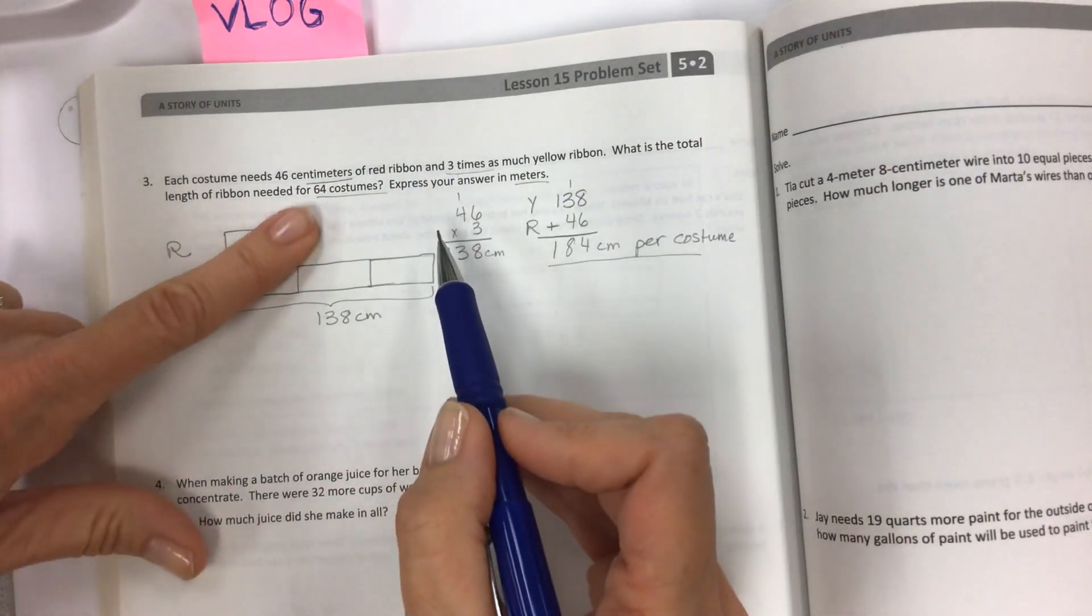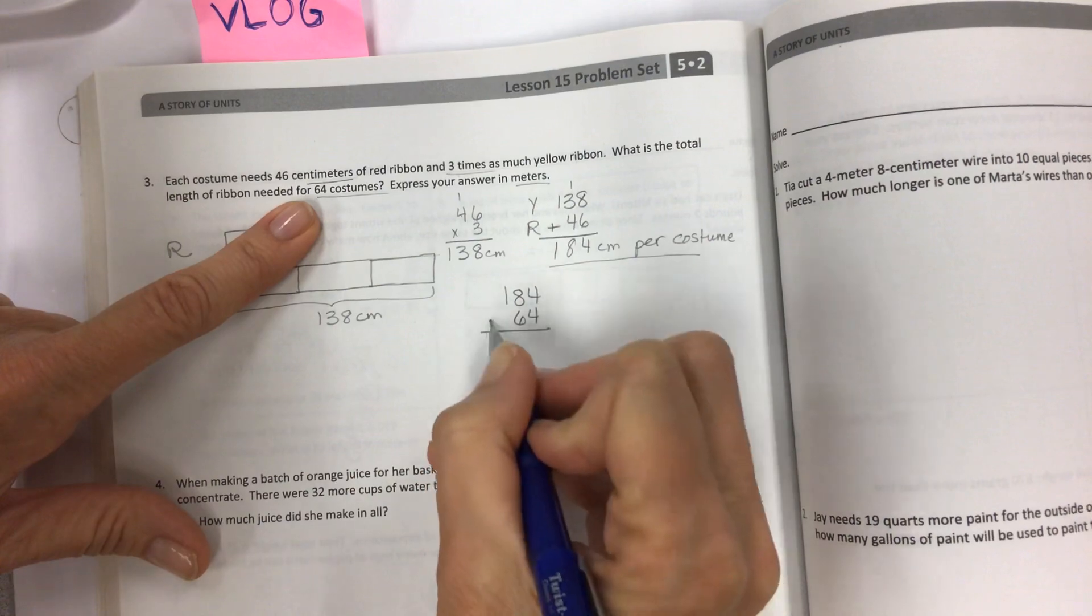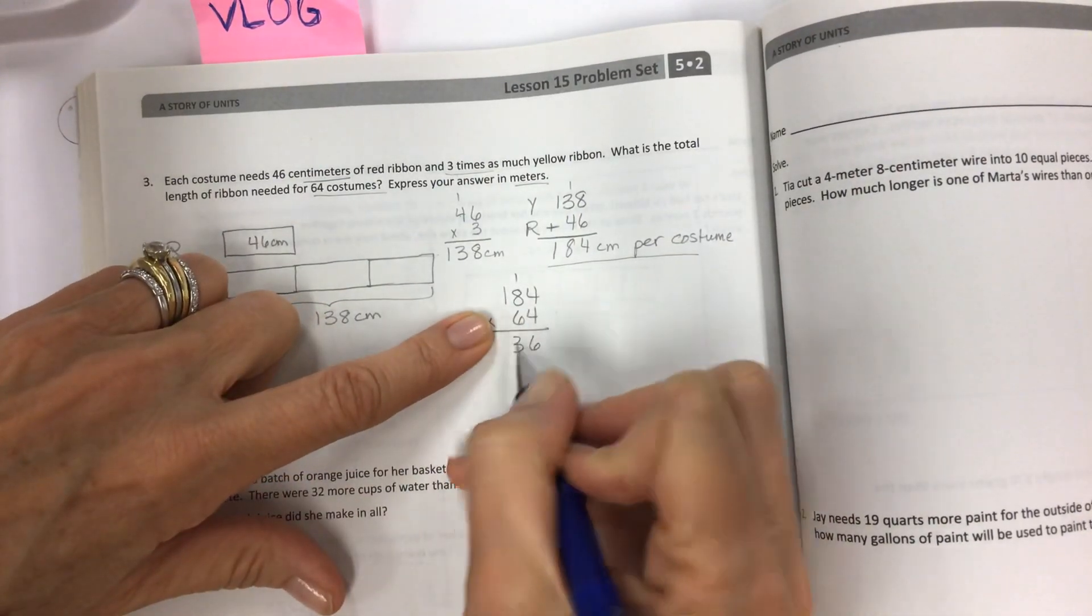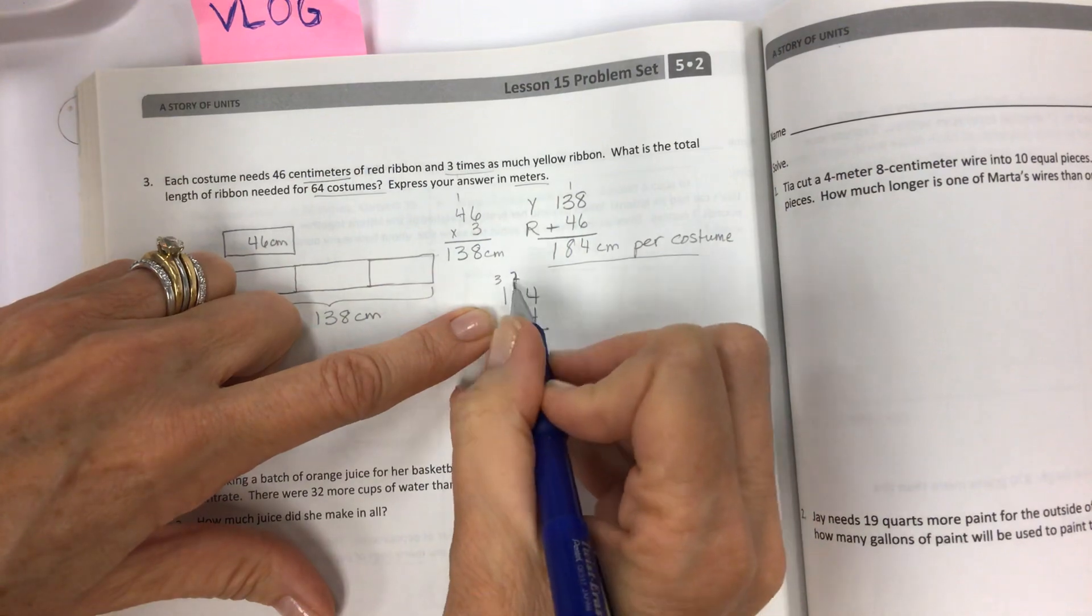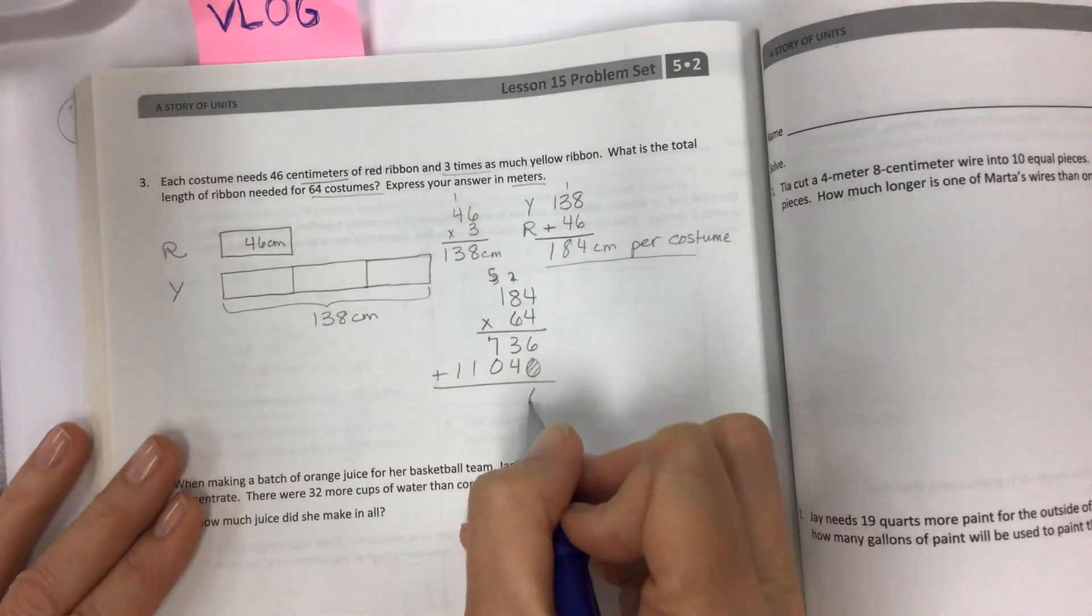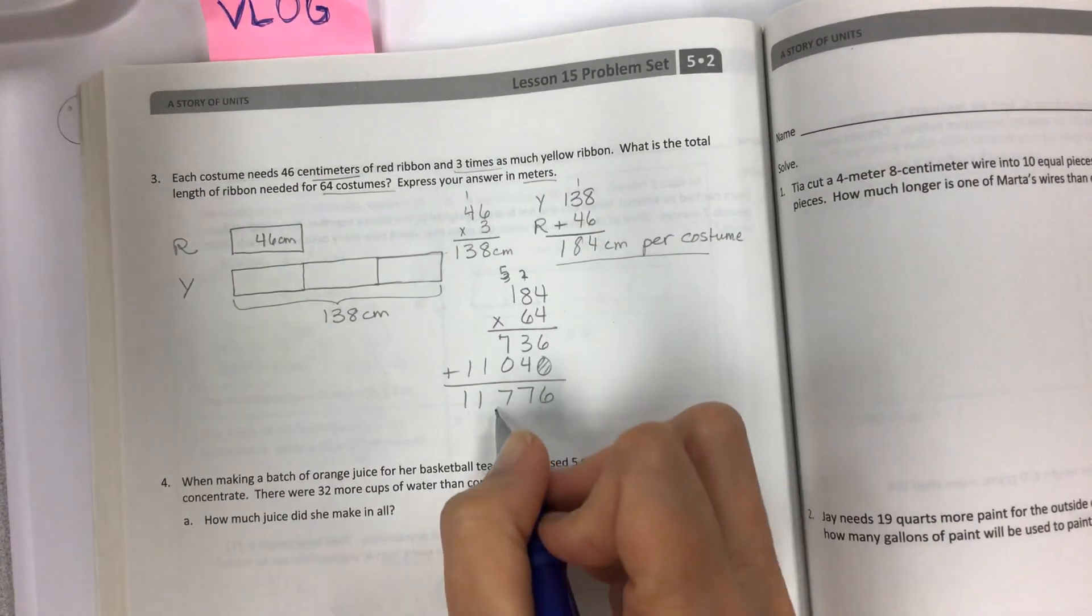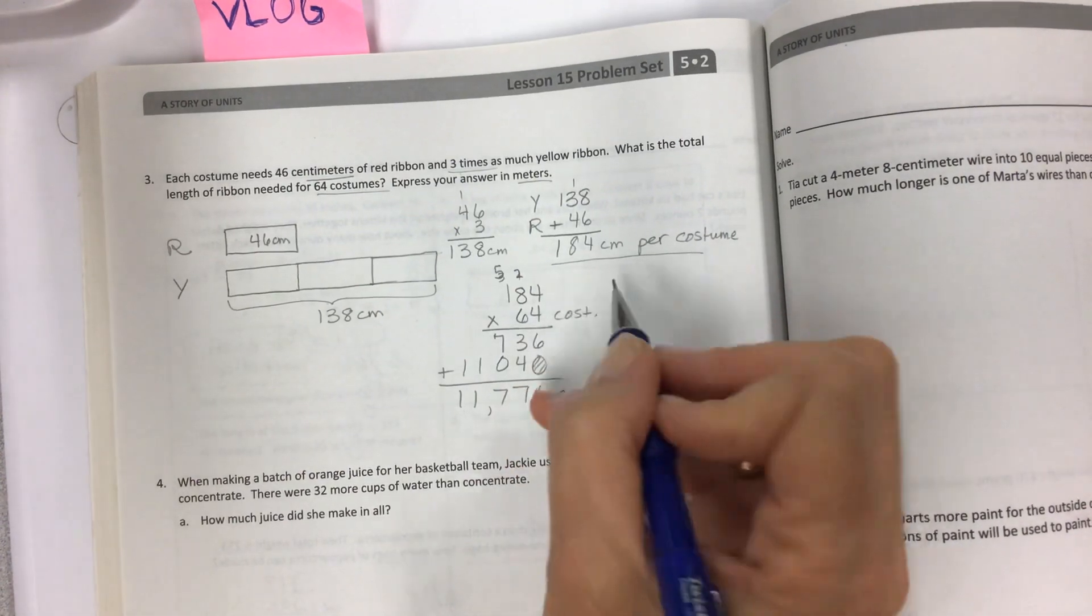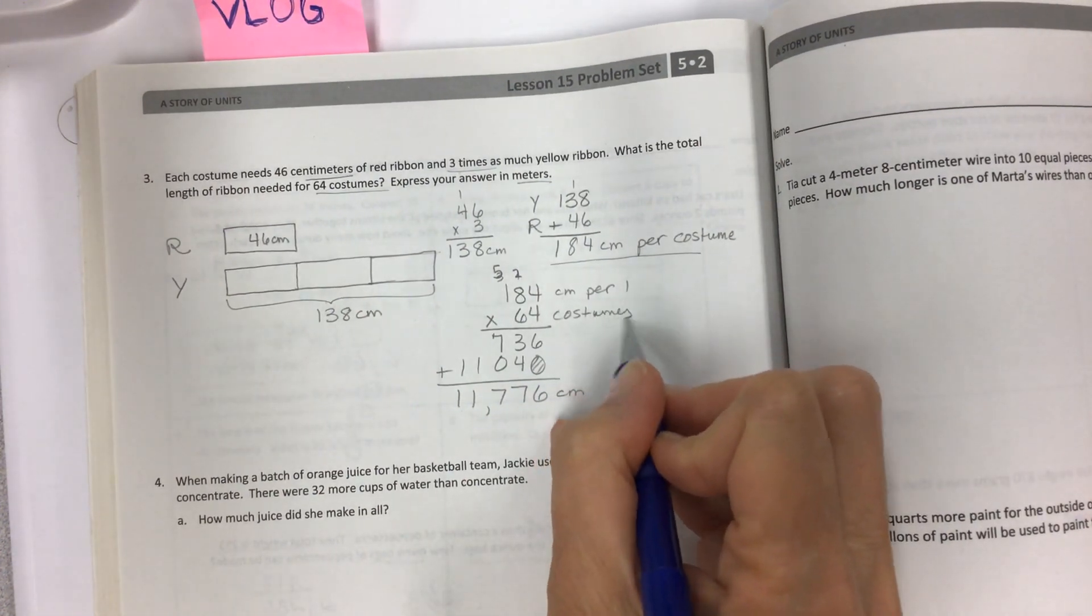Now, if this is one costume, how much ribbon is needed for 64? So you take your 184, multiply it 64 times. And let's just proceed. 4 times 4, 16. 32 plus 1 is 33. Then placeholder. 6 times 4 is 24, carry the 2. 48 plus 2 is 50. 6 times 1 is 6 plus 5 is 11. And then add 6, 7, 7, 1, 1. So what does this represent, this 11,776? That is the total amount of centimeters for the 64 costumes. Centimeters per one, so for all the costumes.